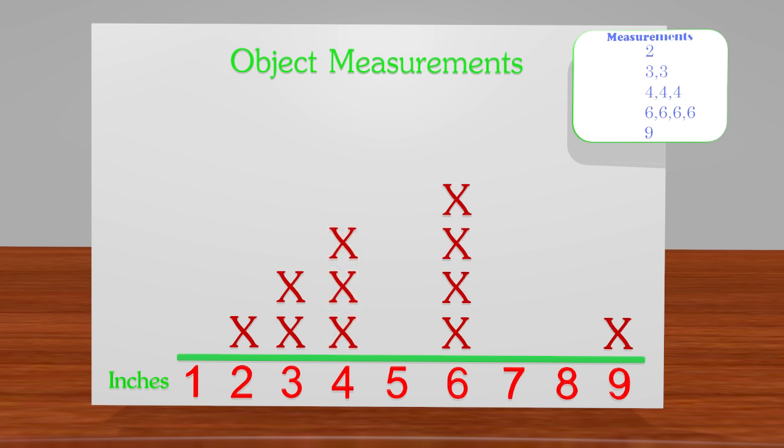So with this information, can you guys tell me how many objects did we have that measured 6 inches long? Great job! We had four items and we can see that in this line plot. We look at the 6 and above the number we see 4 x's, which represent the four items that measured 6 inches.